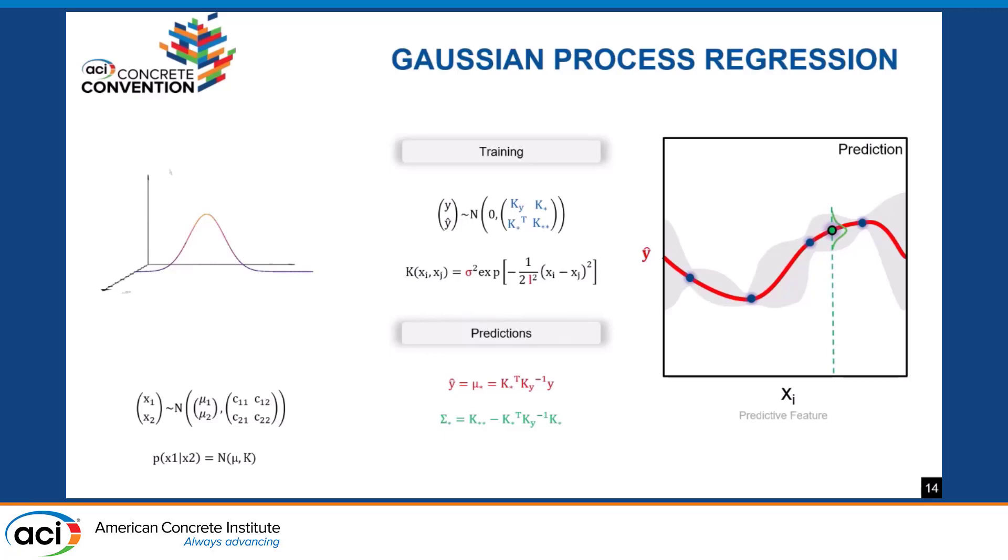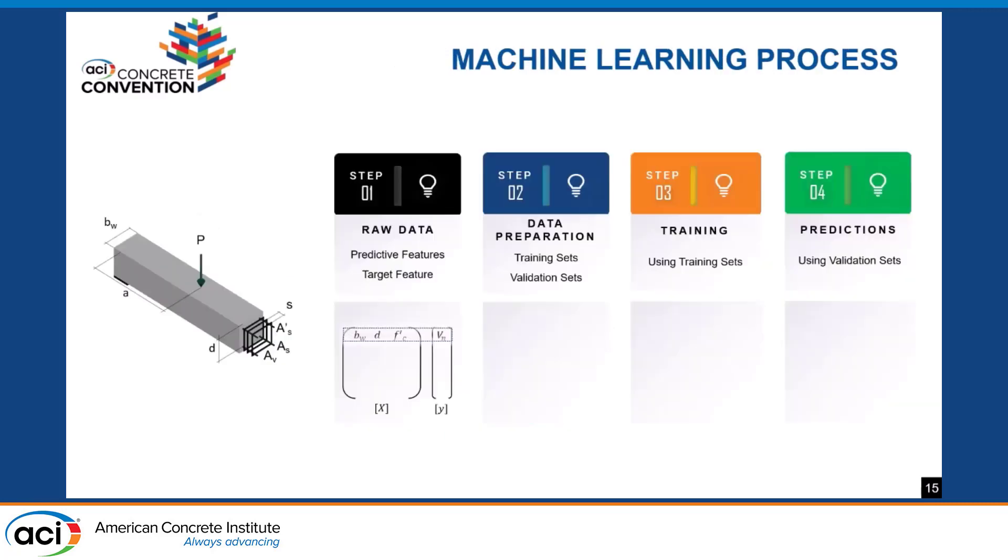The general process of our machine learning is simple. We collect the data, organize them between the predictive and target features, split them into training and validation sets, then train our algorithms using Gaussian process regression. Then we measure the errors.